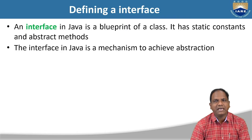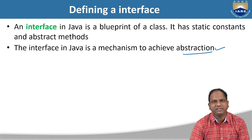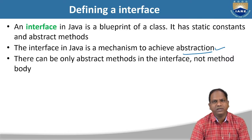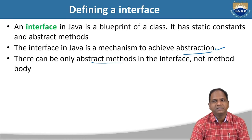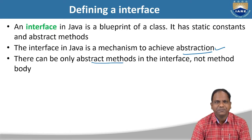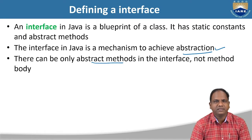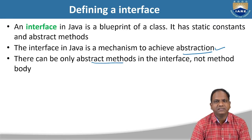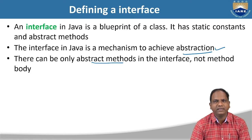All the methods declared inside the interface are abstract methods. It is a mechanism where you can achieve abstraction — hiding the internal details, only the implementation part. An abstract method means you will only declare the method; it does not provide any body to that particular method. Unlike abstract classes which contain both abstract and non-abstract methods, the interface 100% contains abstract methods — only method declarations with no method body.